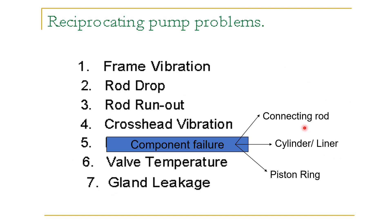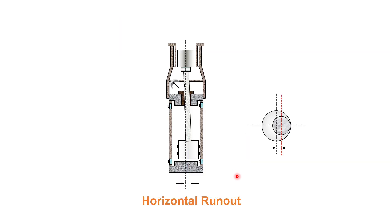Now let us look at some problems in the reciprocating pump. One problem is vibration of the main frame at different points. Then there is rod drop and rod run out — which we will see next. There are also crosshead vibrations, component failures including connecting rod, cylinder, liner, and piston ring failures. Sometimes working temperature may be a problem, and there can also be gland leakage.